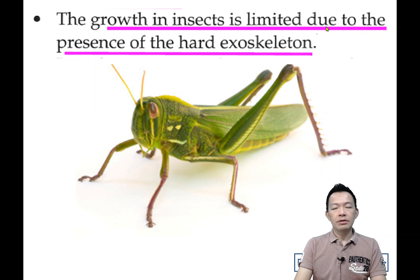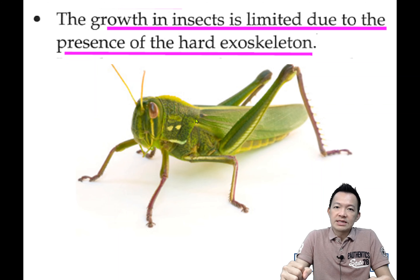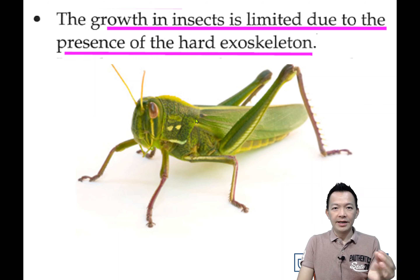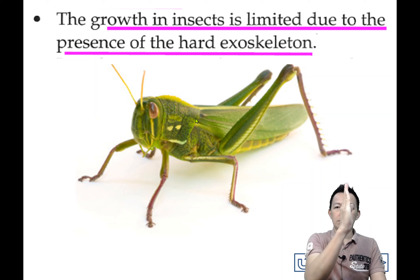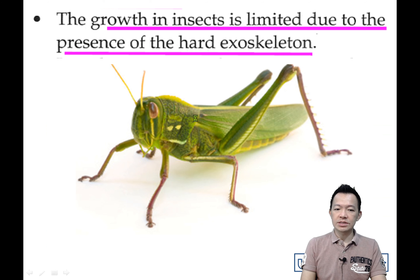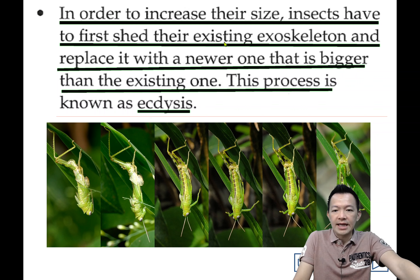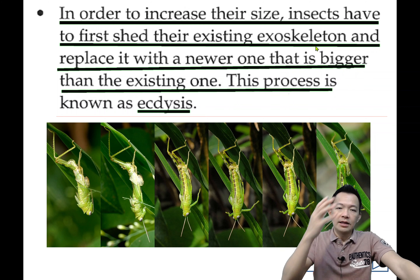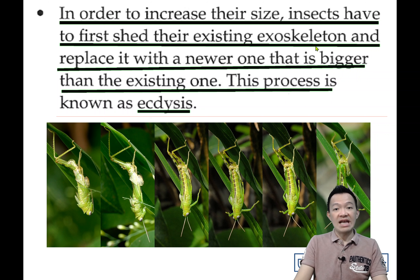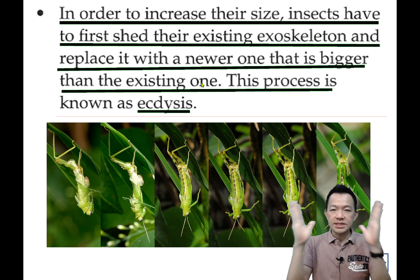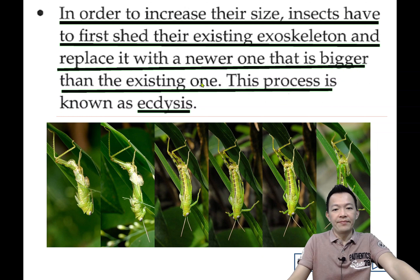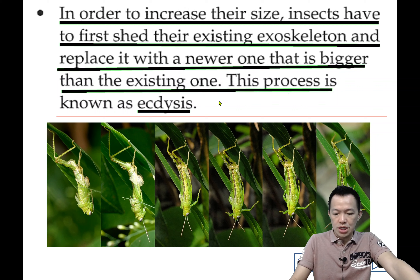But the growth of the insects is limited — they can grow suddenly. In order to increase their size, insects have to first shed their existing exoskeletons. This process is called ecdysis — moulting. The insect must discard its outer skin and then replace it with a new, larger layer before it can grow. That is how it grows overnight.